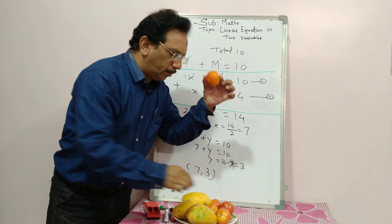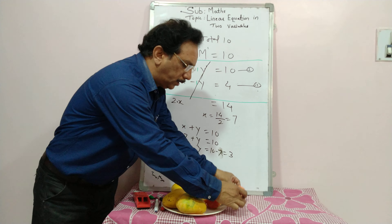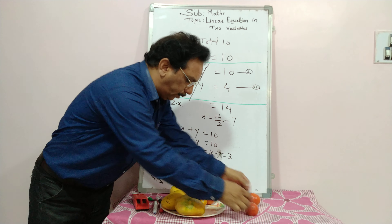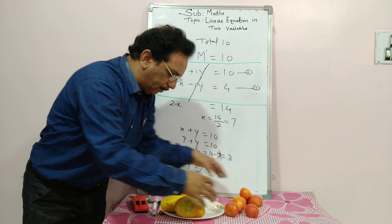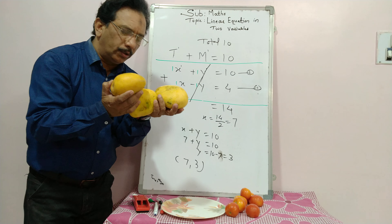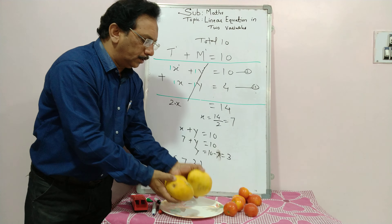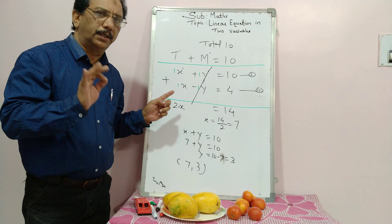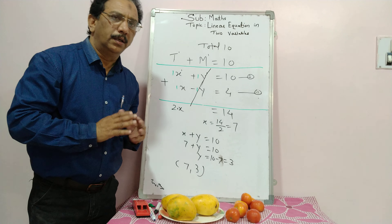So the solution is x equals 7 and y equals 3. You can declare the solution of the given equations is 7 and 3. The number of tomatoes is 7 and the number of mangoes is 3. This is the way to solve a linear equation. This first method is called the elimination method.